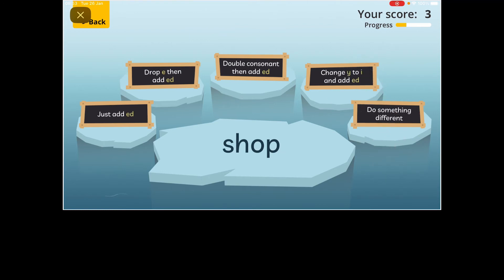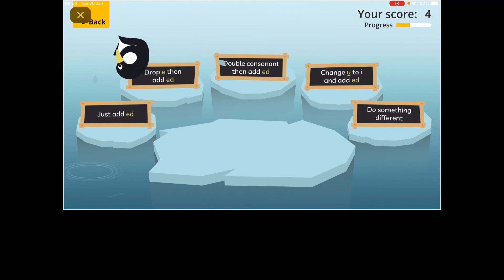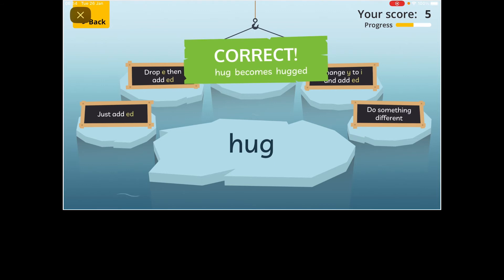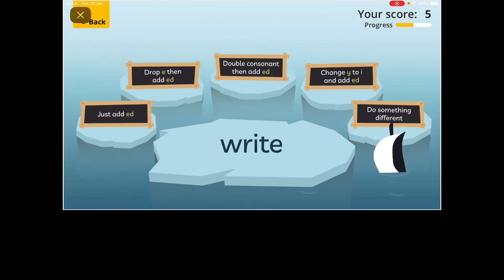I went shopping - I shopped. It's a short O sound so you double the consonant. Hugging - I hugged. It's a short A next to the end, so you double the consonant. I was writing a story - I wrote. That counts as something different because it's a new word with an O.